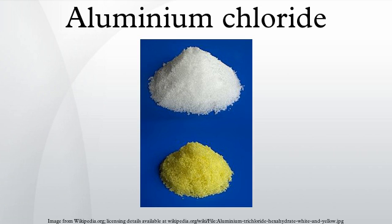Reactions with water: aluminium chloride is hygroscopic, having a very pronounced affinity for water. It fumes in moist air and hisses when mixed with liquid water, as the Cl⁻ ions are displaced with H₂O molecules in the lattice to form the hexahydrate AlCl₃·6H₂O. The anhydrous phase cannot be regained on heating, as HCl is lost, leaving aluminium hydroxide or alumina.